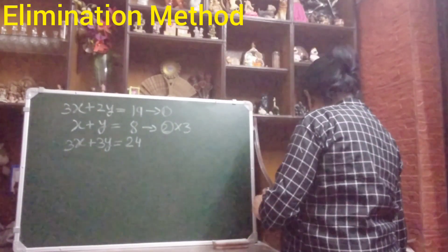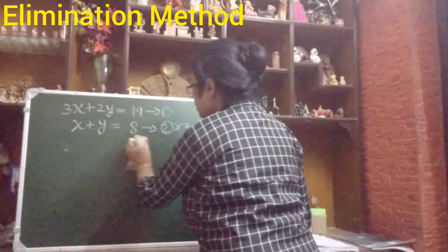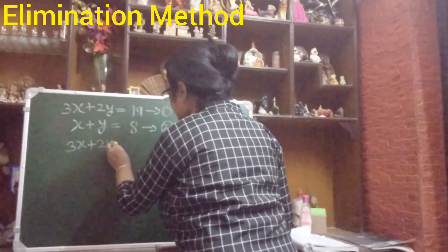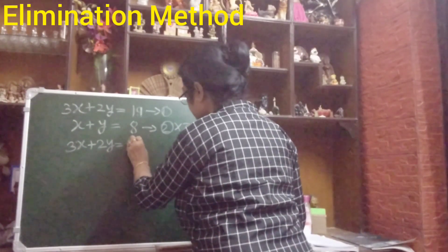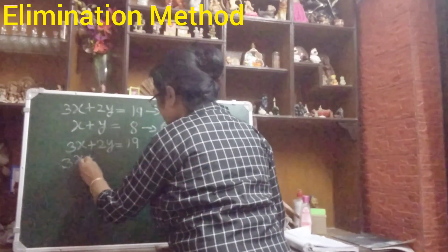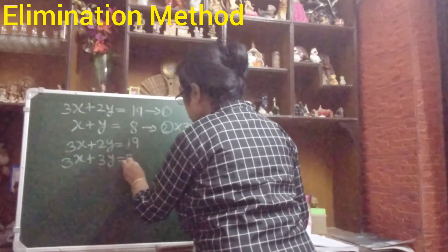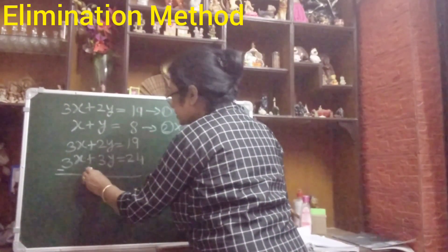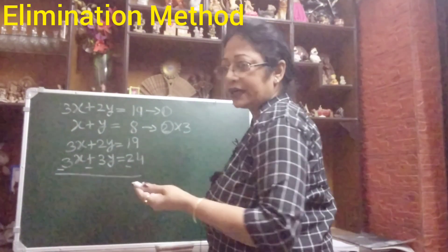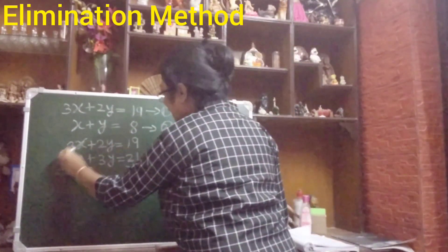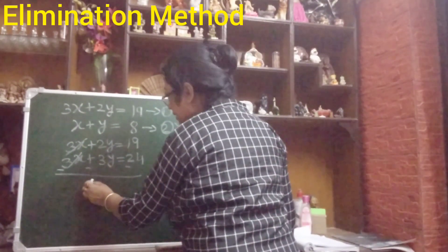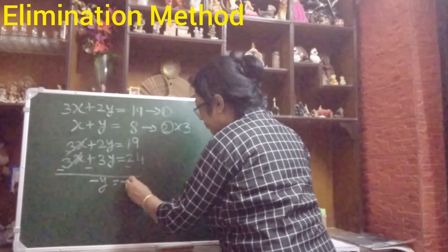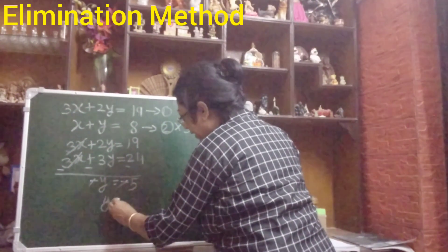Clear? Got it? Now let me write equation number 1 first: 3x plus 2y equals to 19, and 3x plus 3y equals to 24. Now we will do the subtraction and change the signs — minus, minus, minus. Now easily you can cancel positive 3x and negative 3x. 2 minus 3 is minus 1, so it will be minus y. And 19 minus 24 is minus 5 — the two negatives cancel, so y equals to 5.